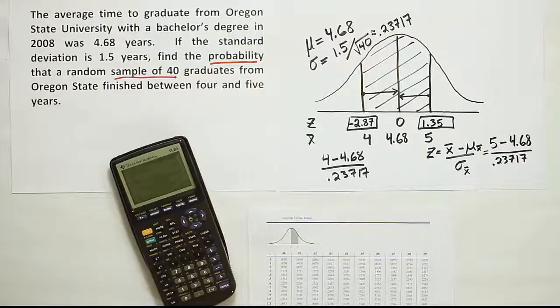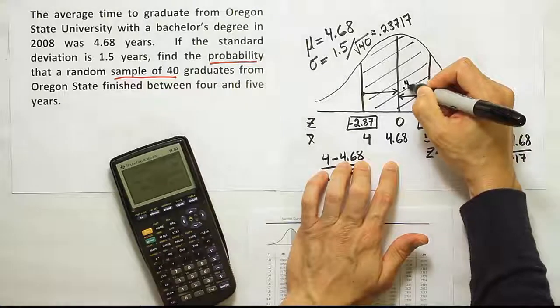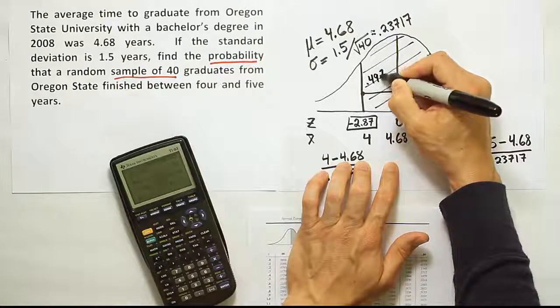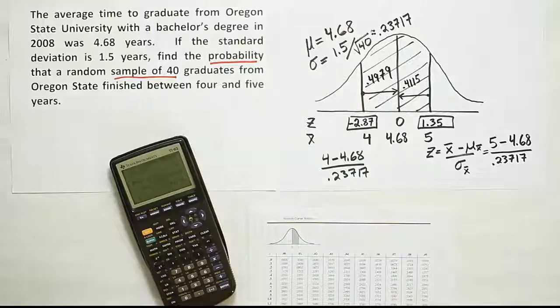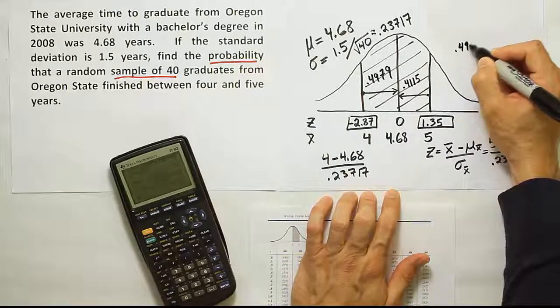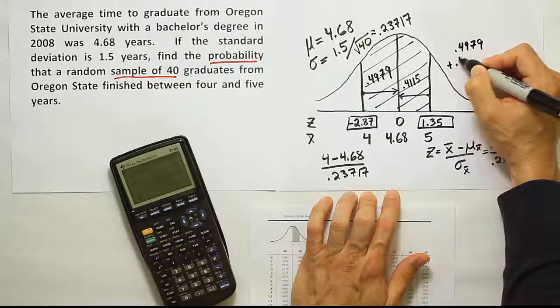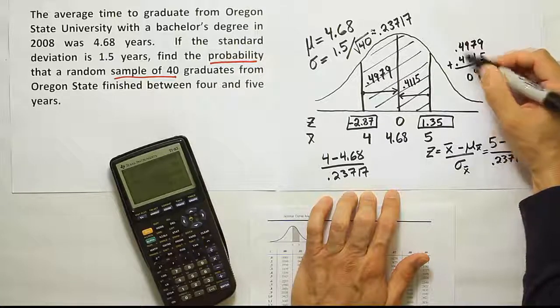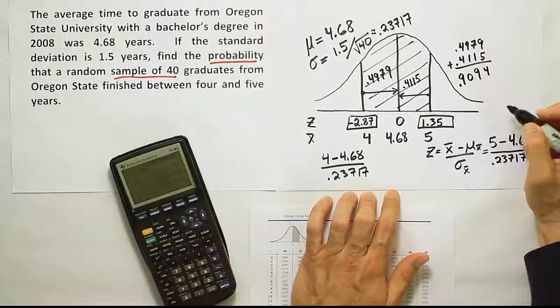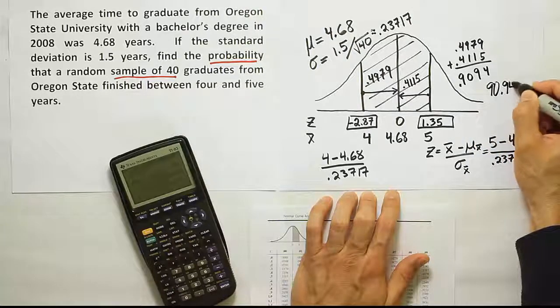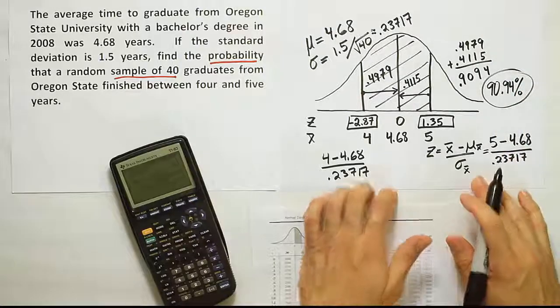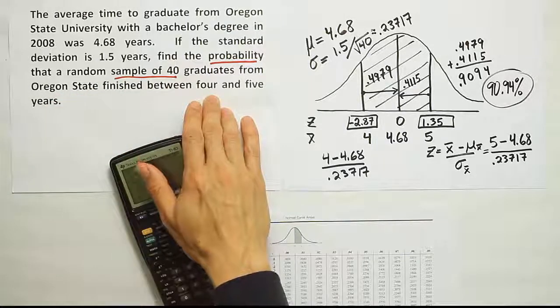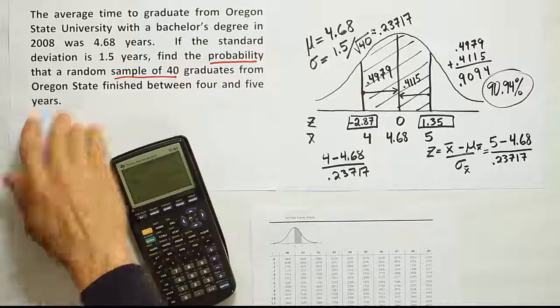After looking up our z-scores, we get the answer for this piece to be .4115. And the answer for this other part here to be .4979. Let's add them together then. So we'll do .4979 added to .4115. The answer is 90.94%. And the way we interpret this is to say that when you grab a sample of 40 graduates from that university, Oregon State, the probability that that average is between 4 and 5 years long, the time it took for that group to graduate on average, that probability is 90.94%.